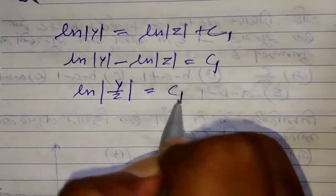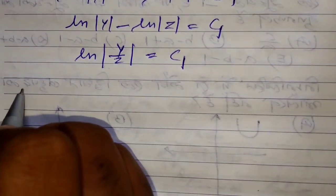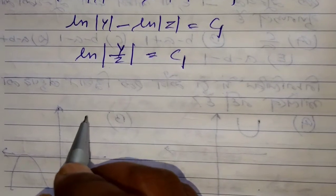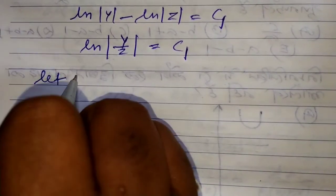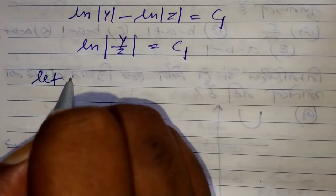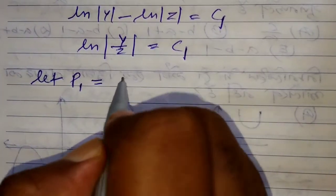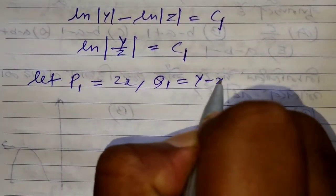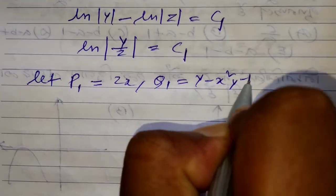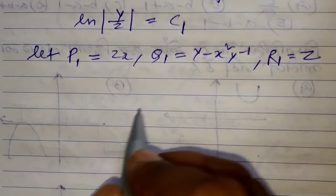This is the final solution of the simultaneous equation. Now using multipliers: let P₁ = 2x, Q₁ = y - x²y⁻¹, R₁ = z.